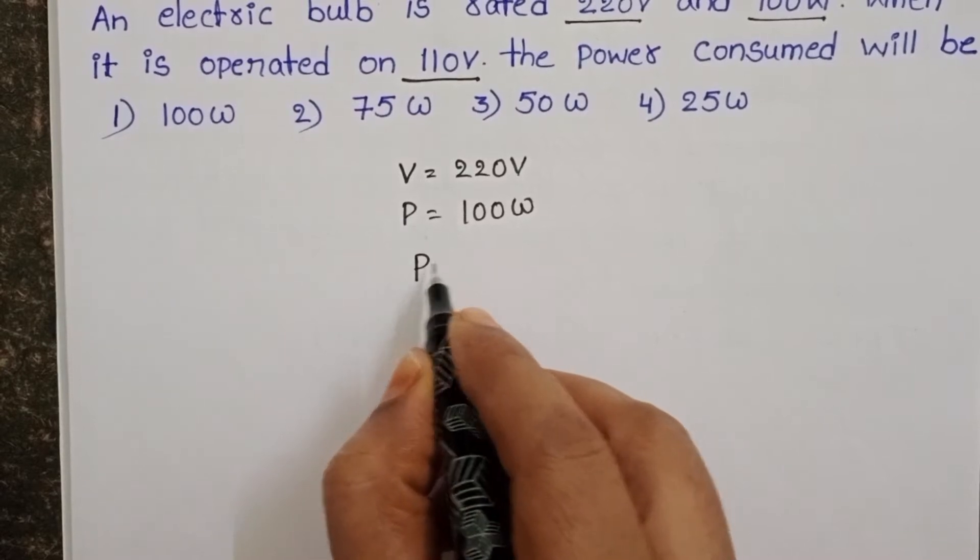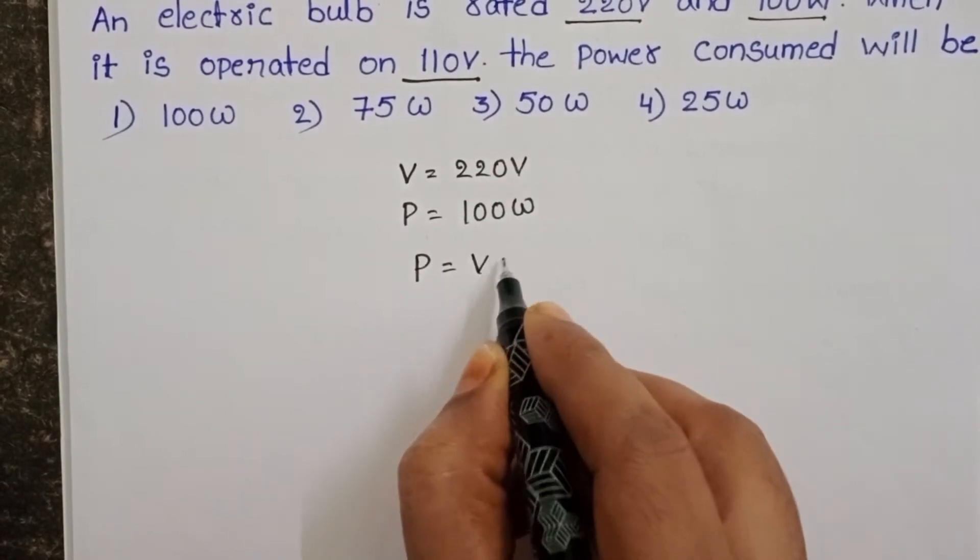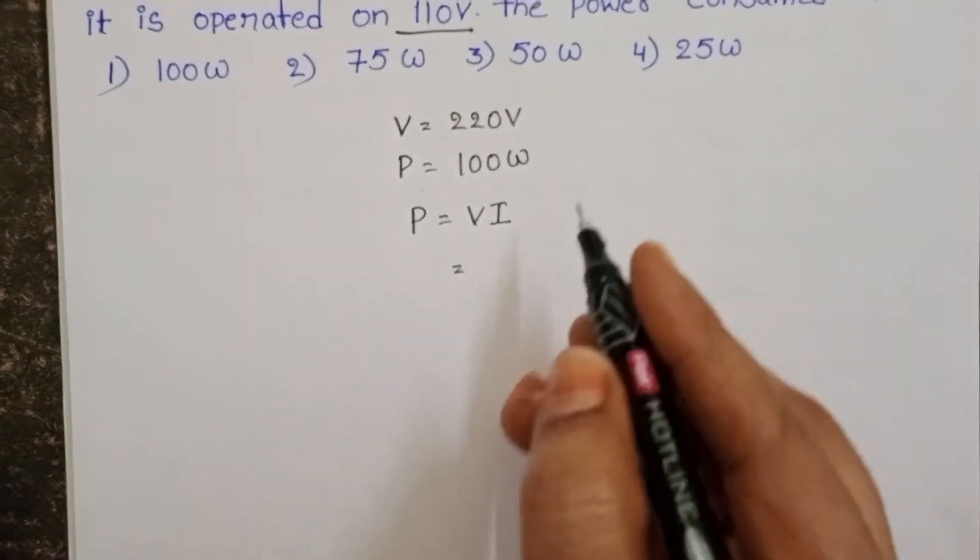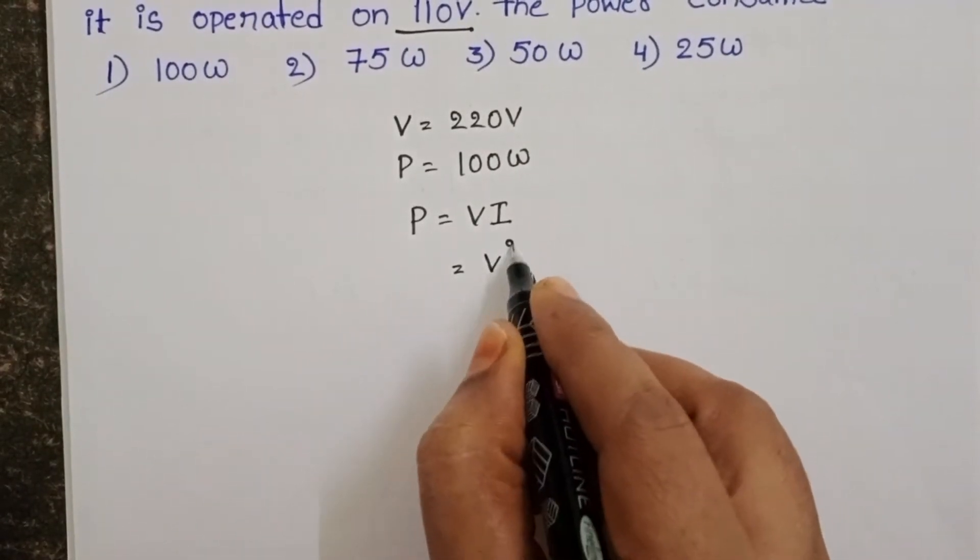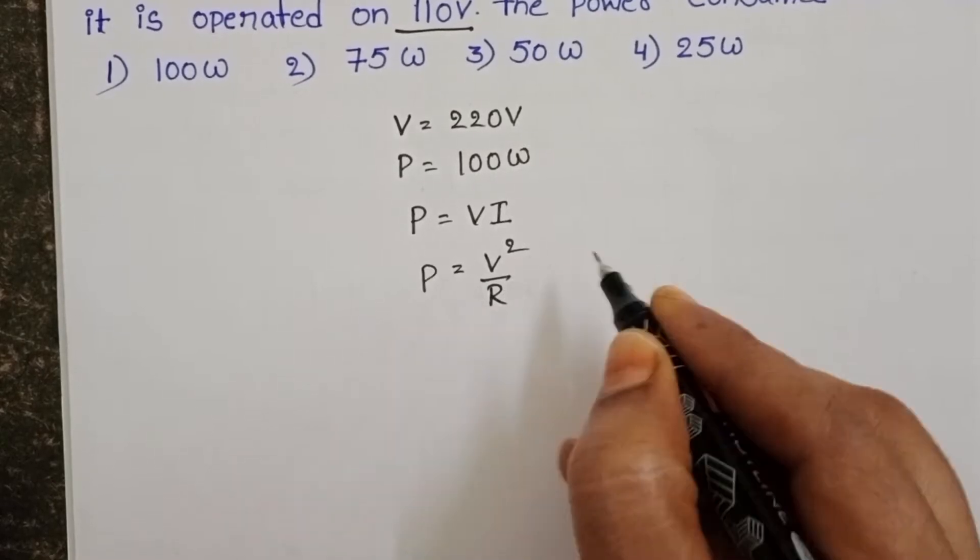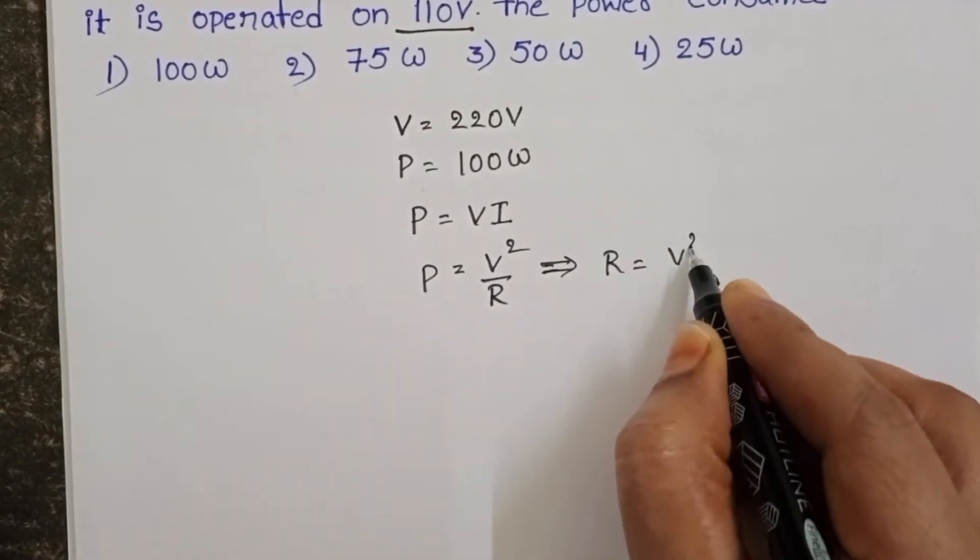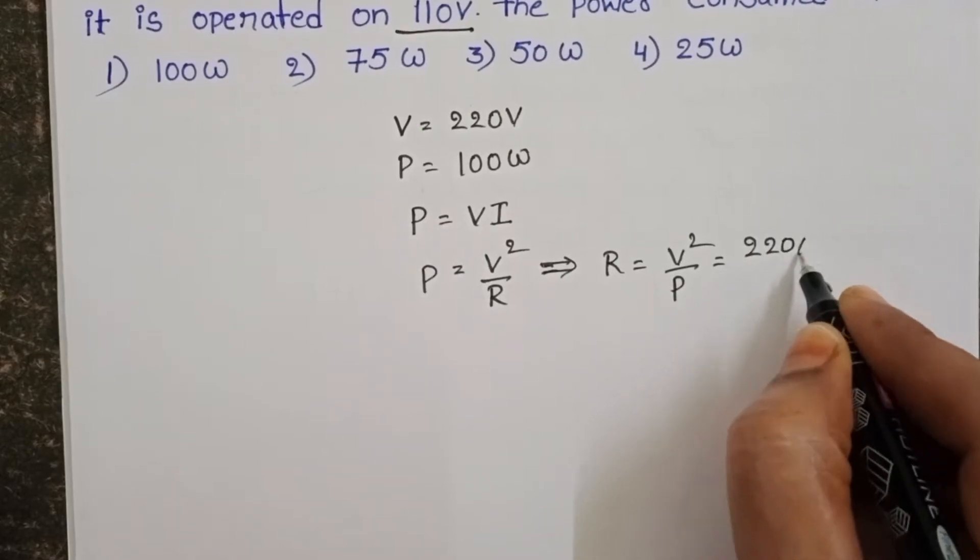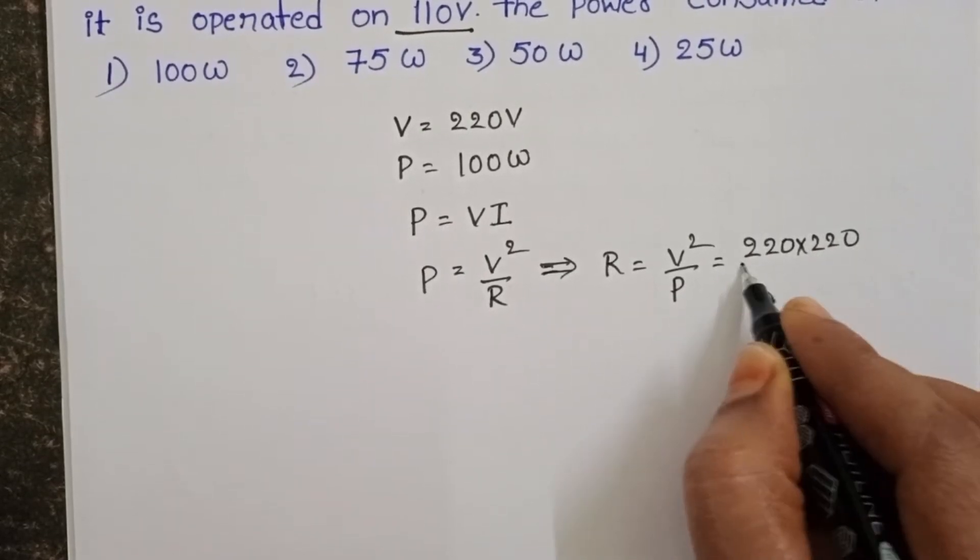We know power is equals to electric potential into current. In place of I substitute V by R. Then it becomes V square by R. R is equals to V square by P. 220 into 220 by 100.